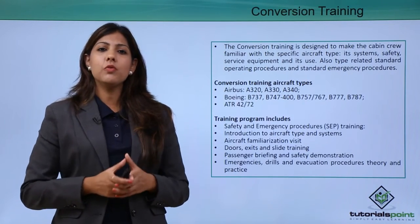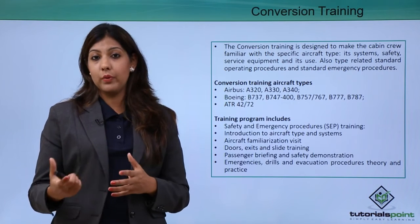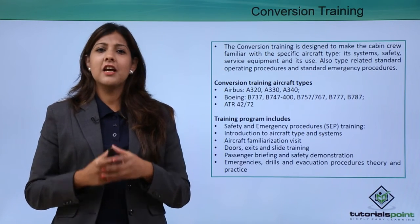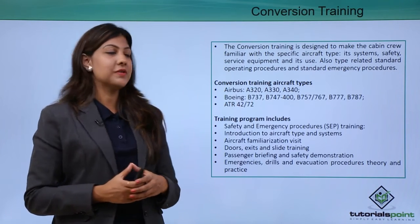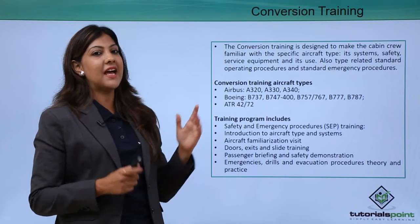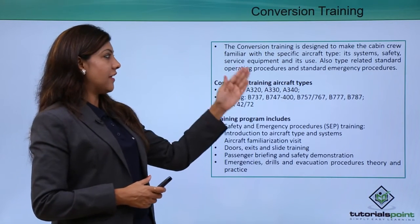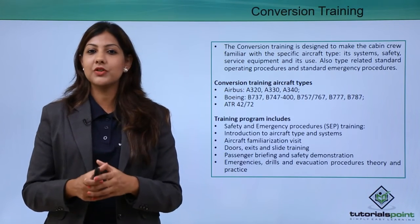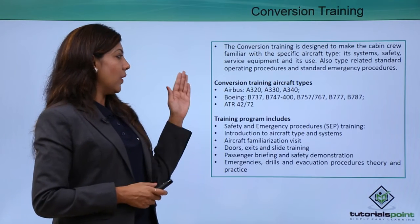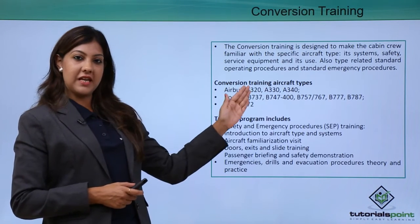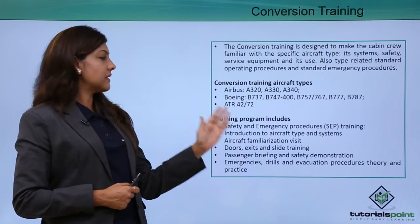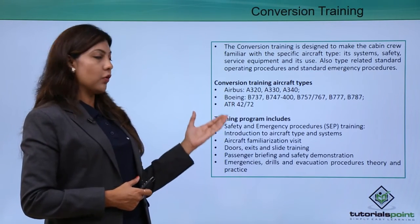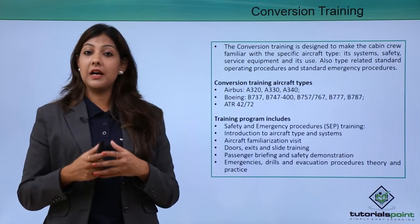Conversion training makes the cabin crew familiar with a specific aircraft type, its safety systems, service equipment, and standard emergency procedures for that particular aircraft. A cabin crew member may fly different Airbus or Boeing aircrafts, or even an ATR propeller aircraft, so she needs to undergo conversion training for each type. The training program includes SEP — Safety Emergency Procedures training — introduction to the aircraft type and its systems.